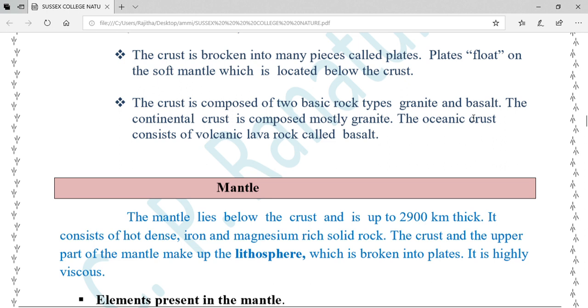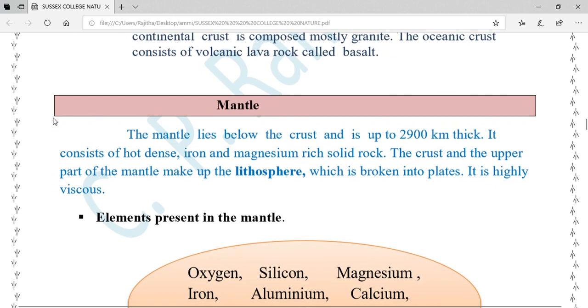The crust is composed of two basic rock types: granite and basalt. The continental crust is composed mostly of granite. The oceanic crust consists of volcanic lava rock called basalt.